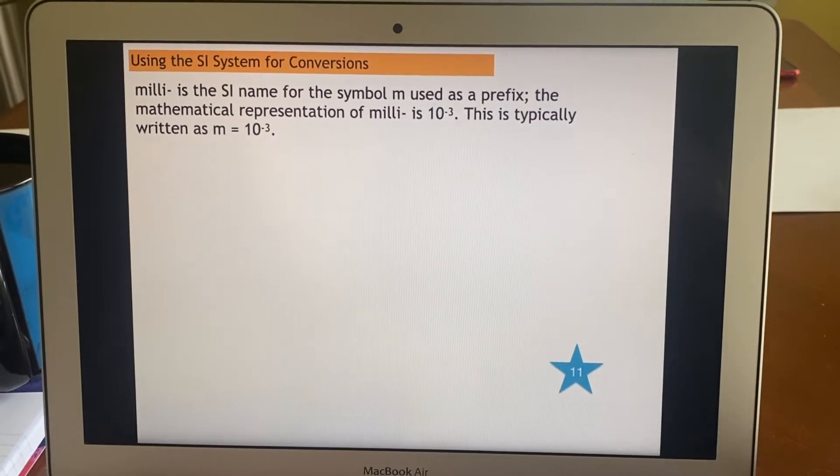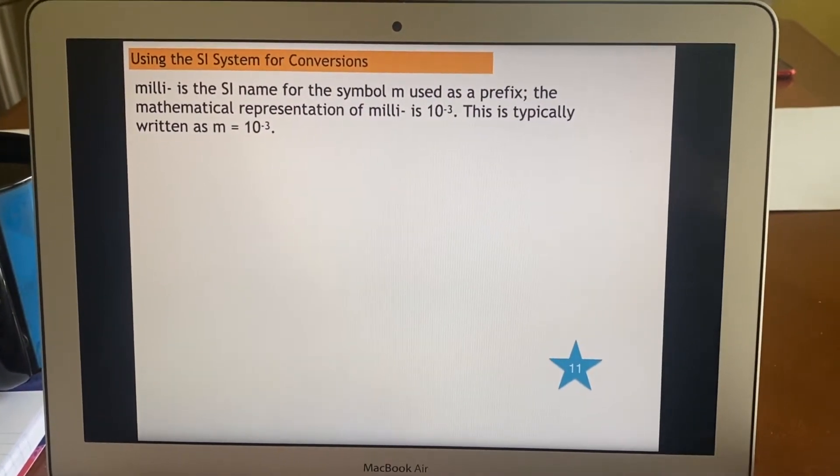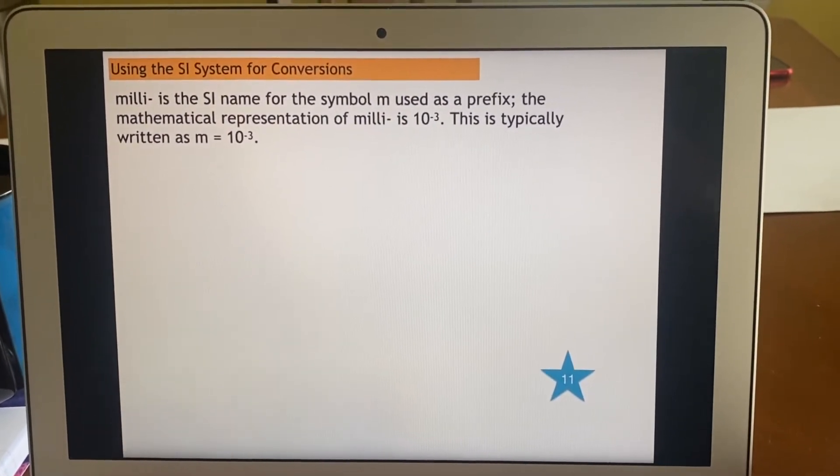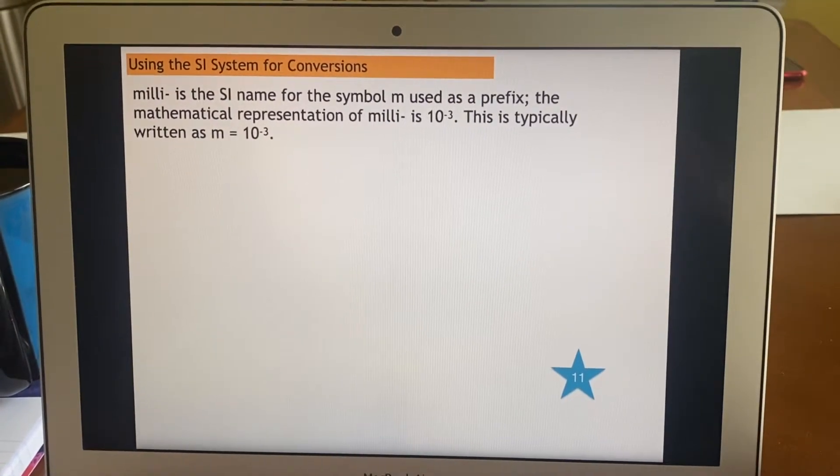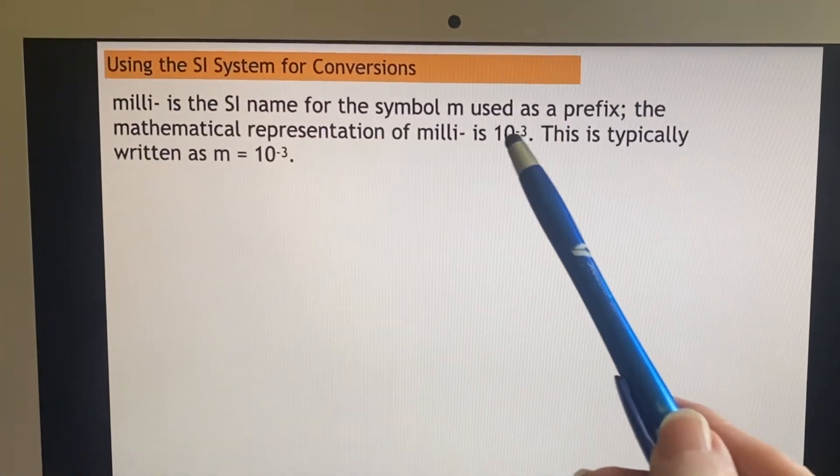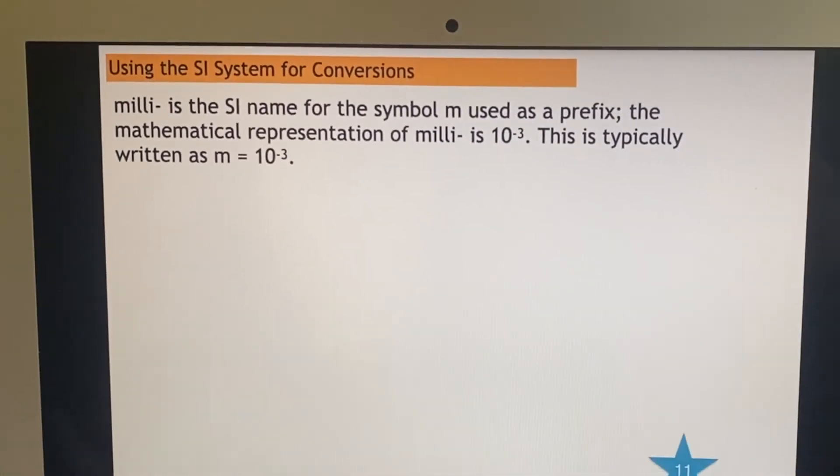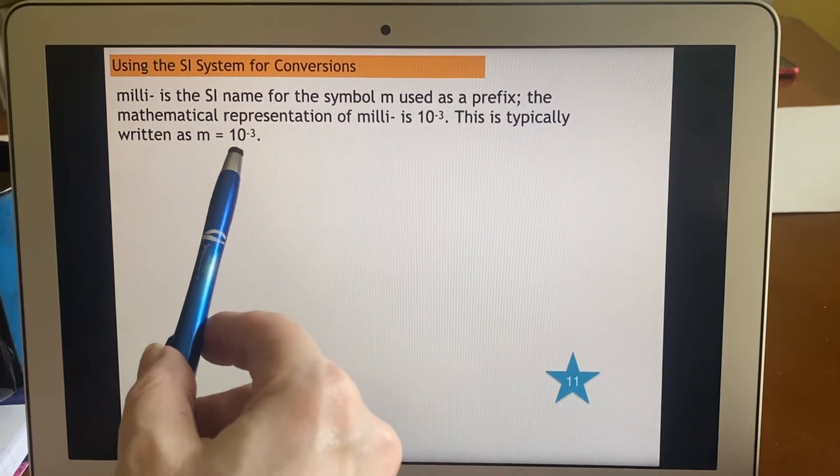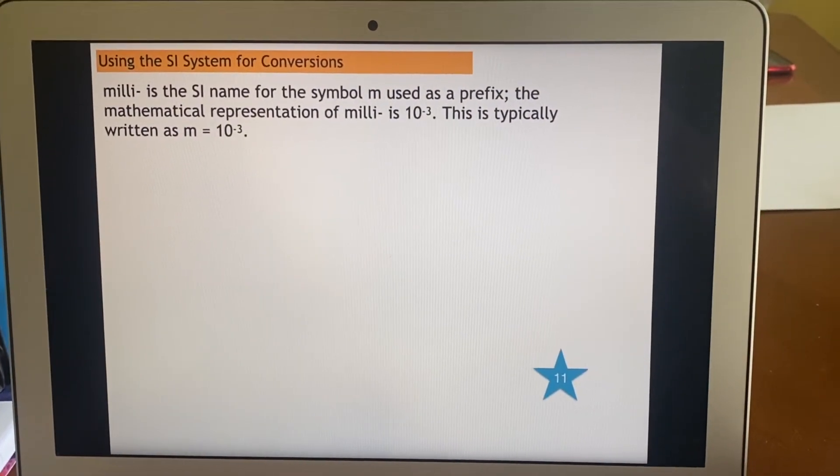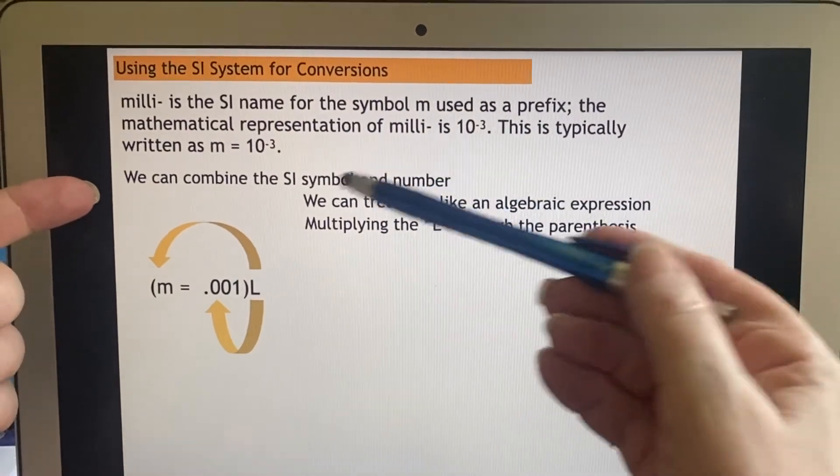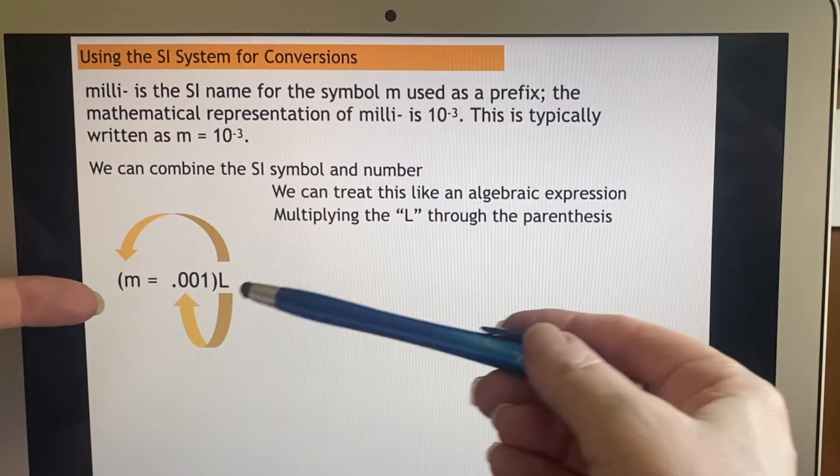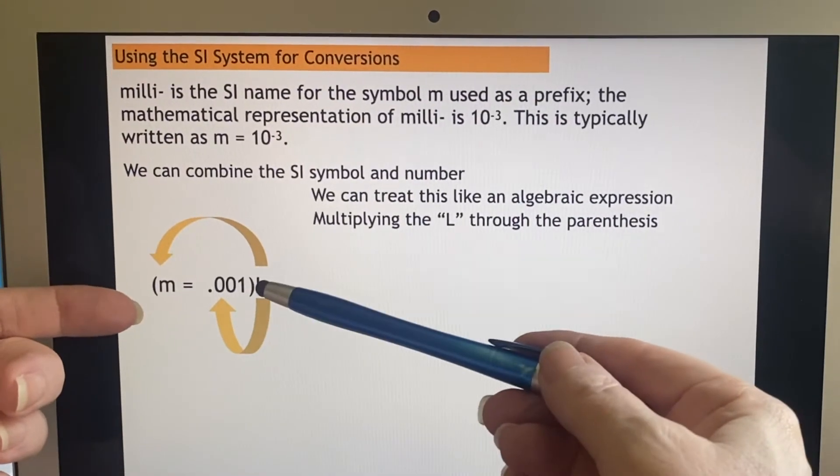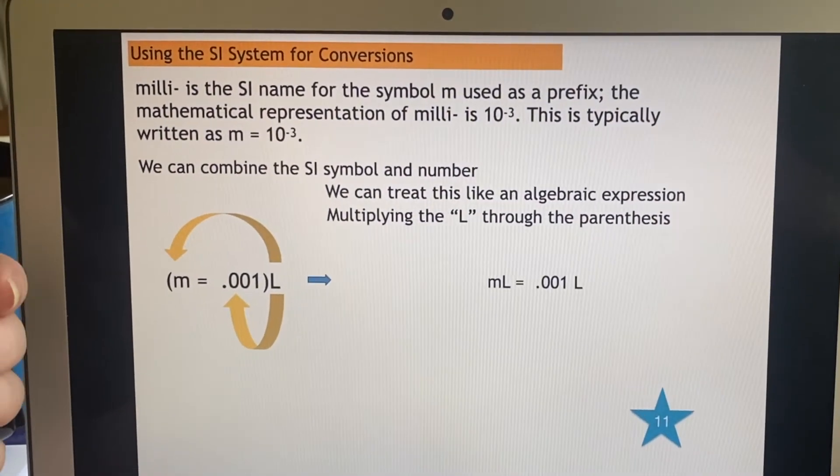A lot of times we're using the SI system for conversions, so you need to know how those work together. For example, milli- uses the symbol m as a prefix, and mathematically that's the same thing as saying 10 to the minus third, which is one one-thousandth. You can combine the SI symbol and number like an algebraic expression. For instance, we can apply it to liters and say a milliliter is one-thousandth of a liter.